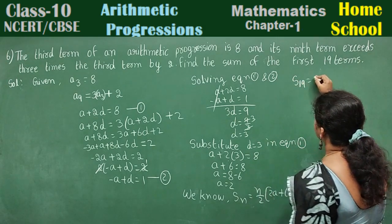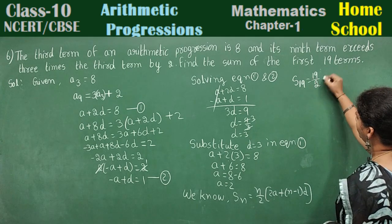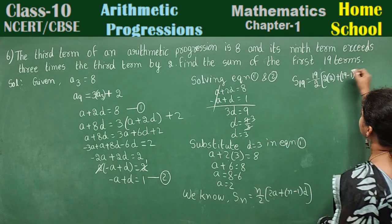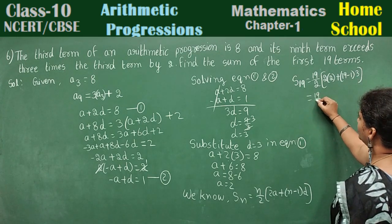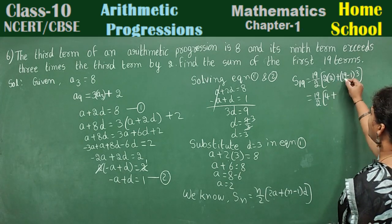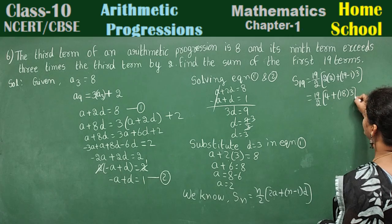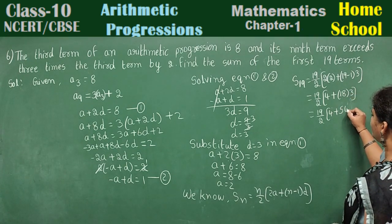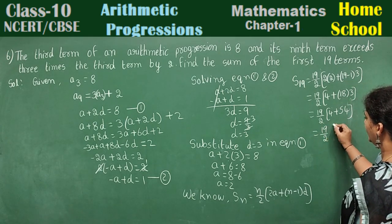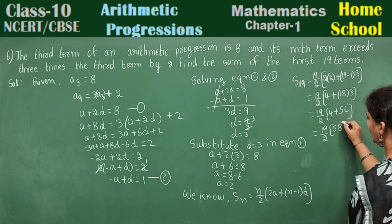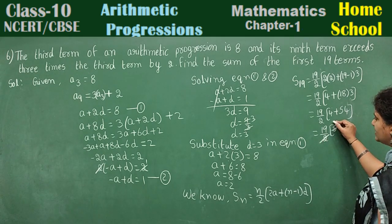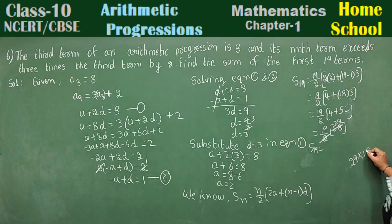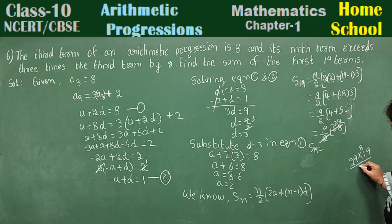S19 is equal to 19 by 2 into 2A, 2 into 2, plus 19 minus 1 into D value 3. 19 by 2 into 4 plus 18 times 3 is 54. 19 by 2 into 4 plus 54 will be 58. Can you cancel this? 19 into 29. 9 times 2 is 18, 29.